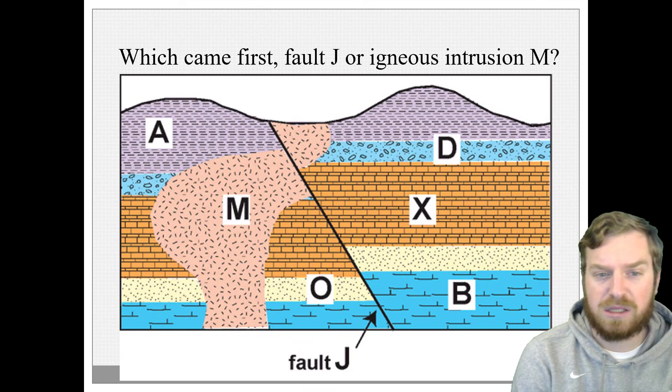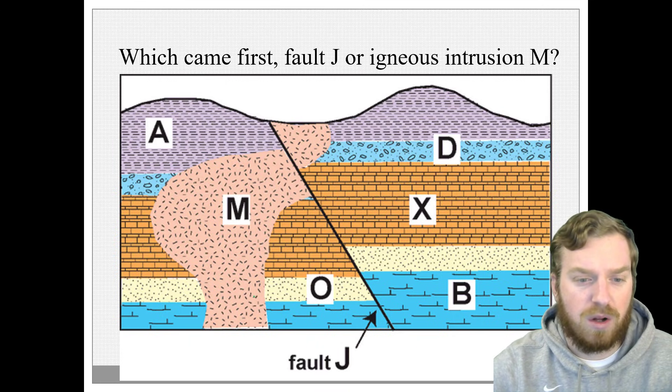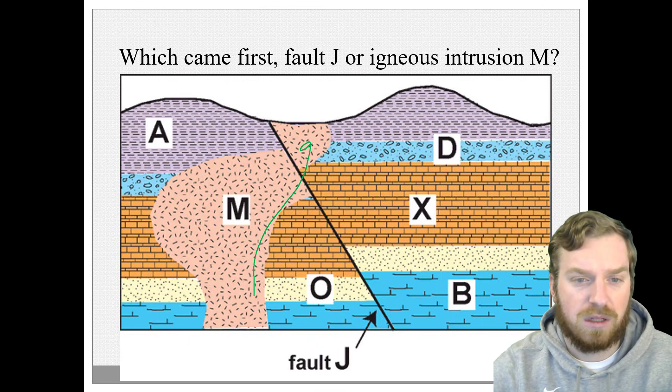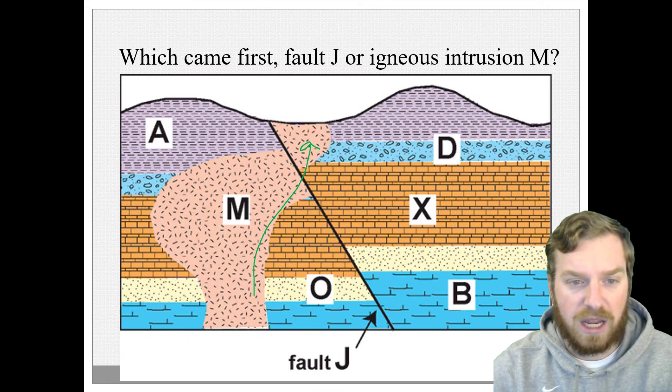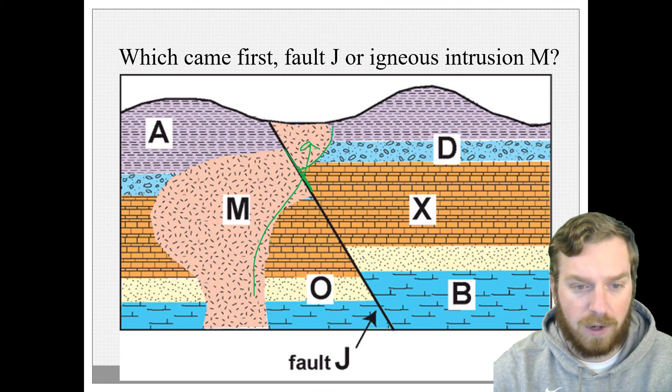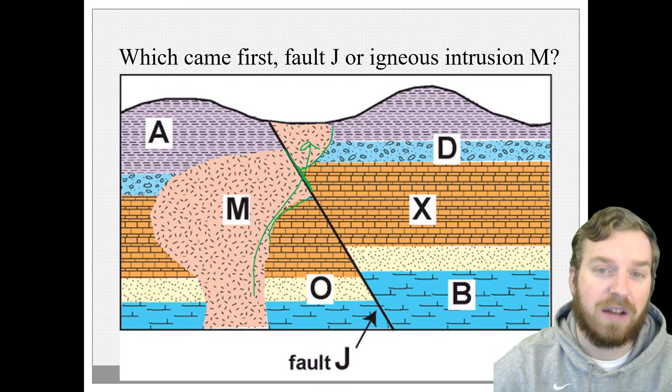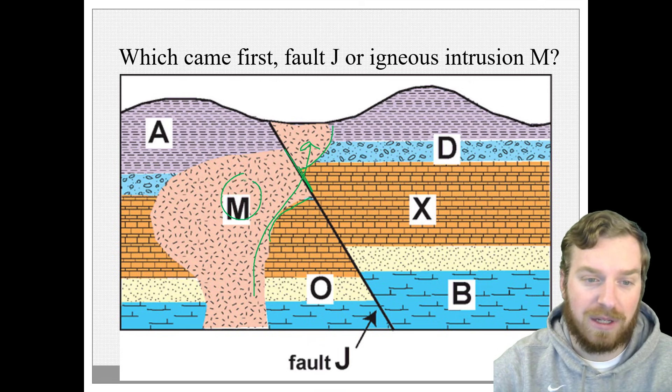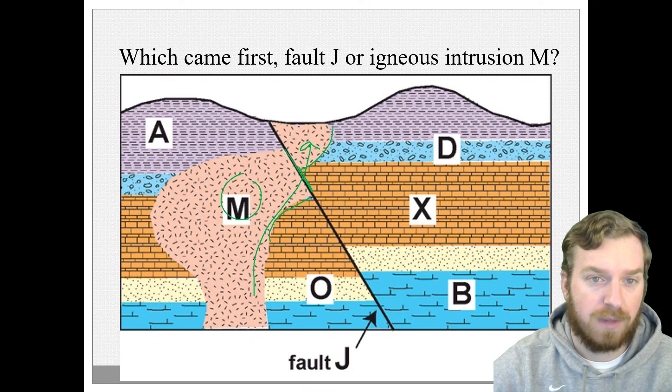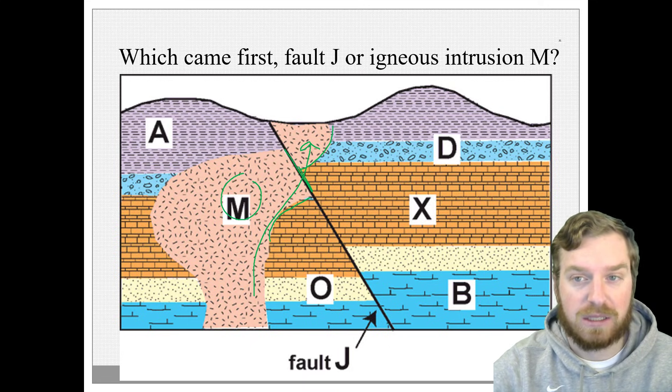So because M intruded on all these rocks and fault line J alters that, it cuts through it. We could see that these don't line up right here. We can say that the fault had to have cut these rocks after M intruded and went to the surface. So which came first? Fault line J or igneous intrusion M. The answer is igneous intrusion M.